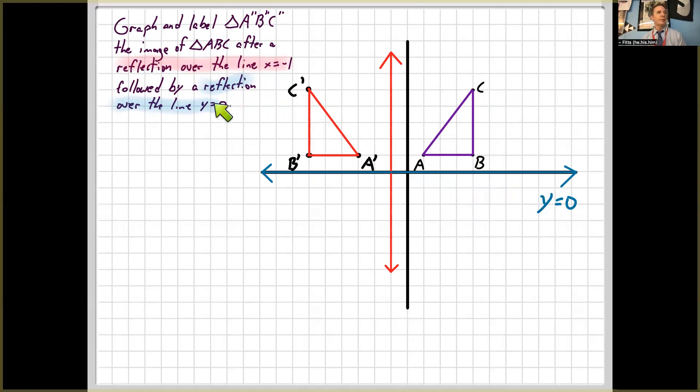So we're going to reflect this. So A prime is going to go down here, B prime over here, and C prime is one, two, three, four, five away from the line of reflection. So it's going to go five over. So there's our next triangle, A double prime, B double prime, C double prime.